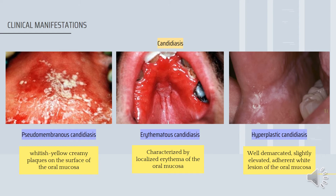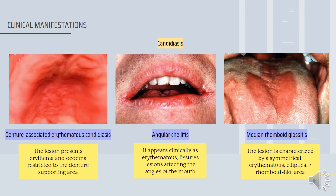Candidiasis has six clinical manifestations. First, pseudomembranous candidiasis: whitish-yellow creamy plaque on the surface of the oral mucosa. Second, erythematous candidiasis: localized erythema of the oral mucosa. Third, hyperplastic candidiasis: demarcated, slightly elevated adherent white lesion. Fourth, denture-associated erythematous candidiasis: erythematous and edematous lesion restricted to the denture-supporting area. Fifth, angular cheilitis: erythematous fissuring affecting the angles of the mouth. Sixth, median rhomboid glossitis: a symmetrical erythematous elliptical or rhomboid area.